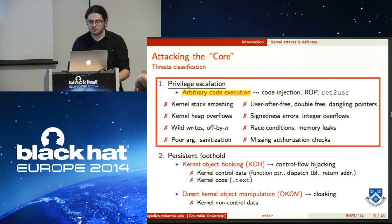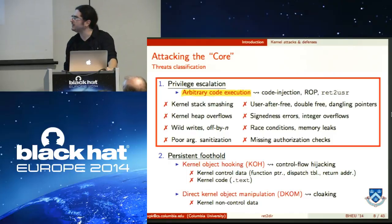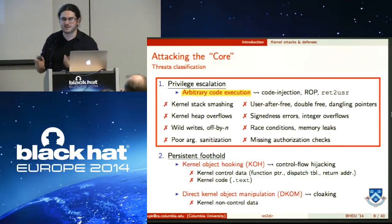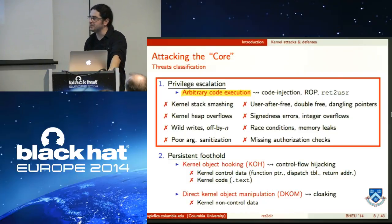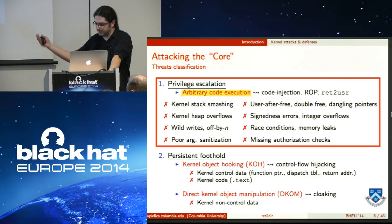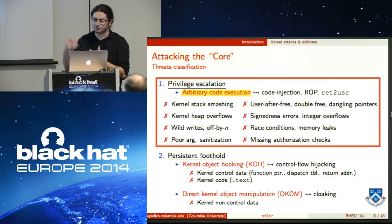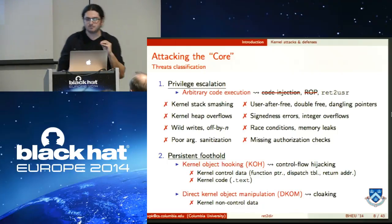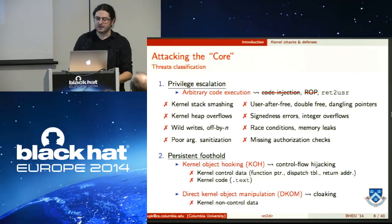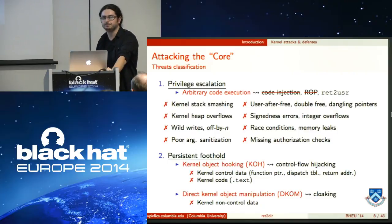As with user processes, kernel exploitation is done either by code injection — injecting data and corrupting control data like a function pointer — or, since non-executable memory and ASLR block that, by using a ROP approach injecting control data instead. However, most kernel exploits use a different technique called return-to-user-space.